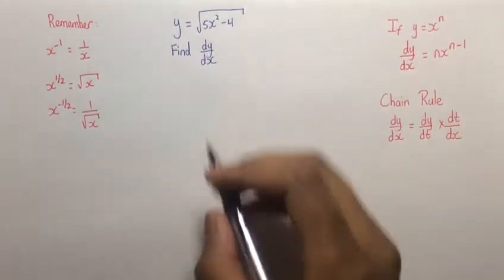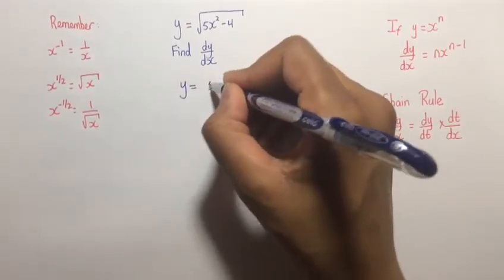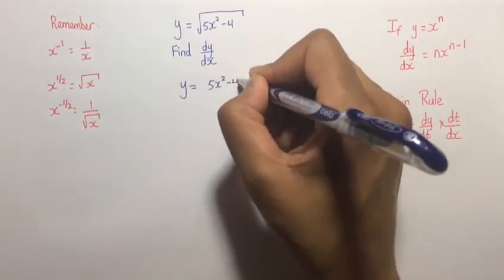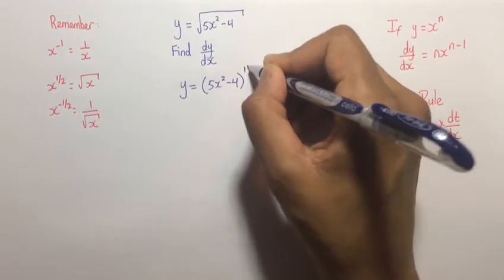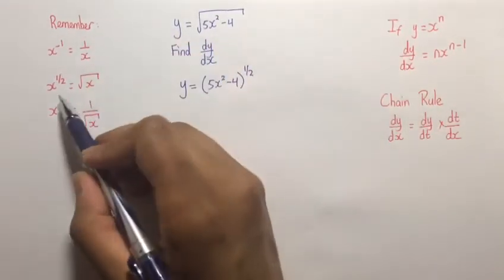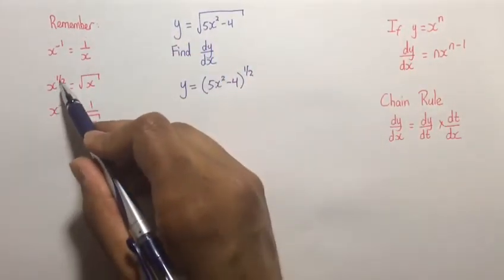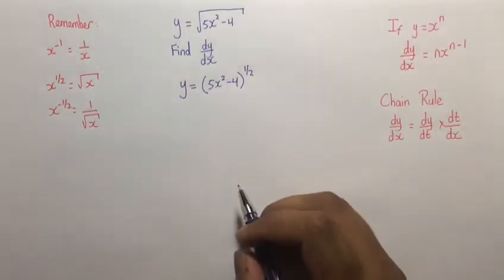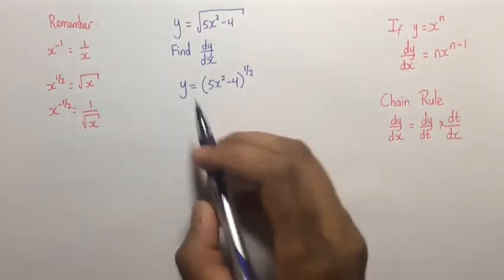Before we begin, let's write y as (5x² - 4)^(1/2). Simply remember that any number to the power of 1/2 is equal to the root of that number. So now that we have y in this form,